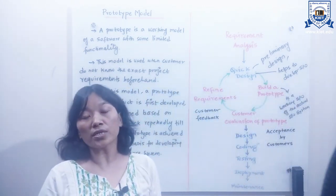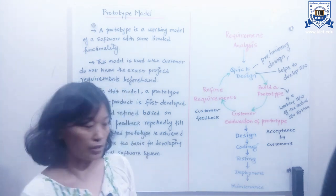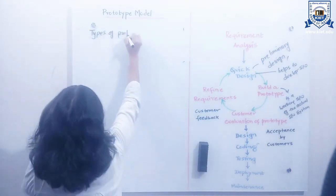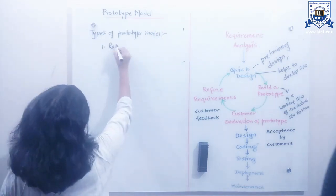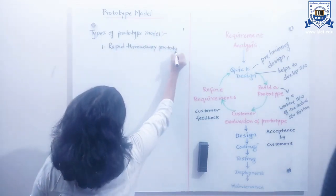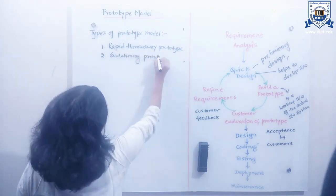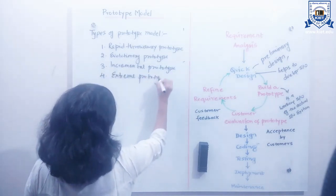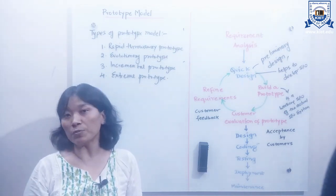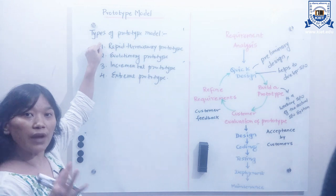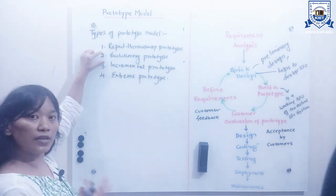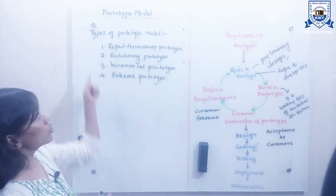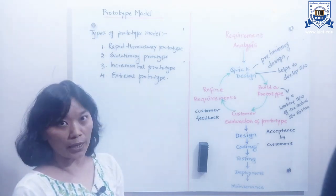There are four types of prototype models. The first one is the rapid throwaway prototype model. The second is evolutionary prototype, the third is incremental prototype, and the fourth is extreme prototype.